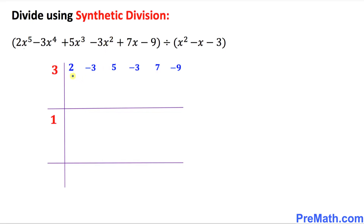Here's the very first step. You see this 2 over here — the first number — I want you to drag it all the way down to the bottom. So 2 shows up over here. As far as the next number, negative 3, is concerned, drag it down to right here in this box.